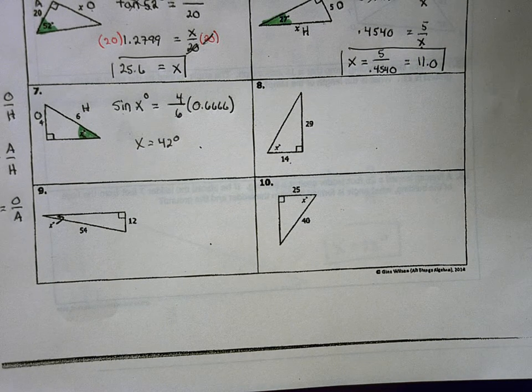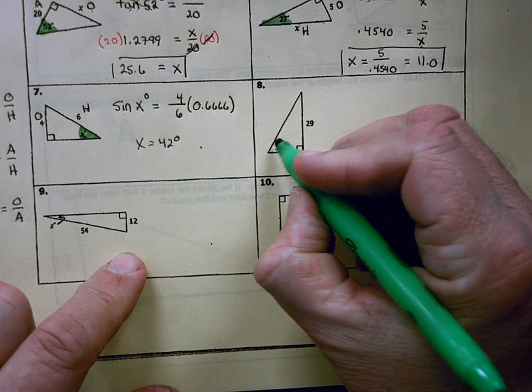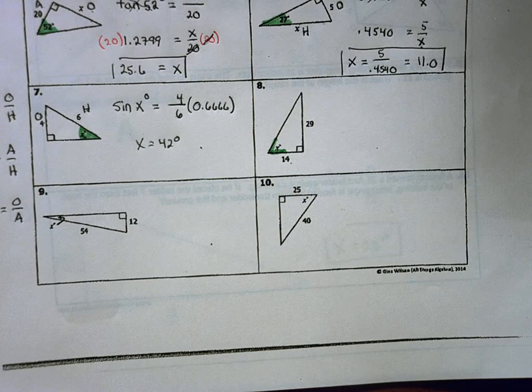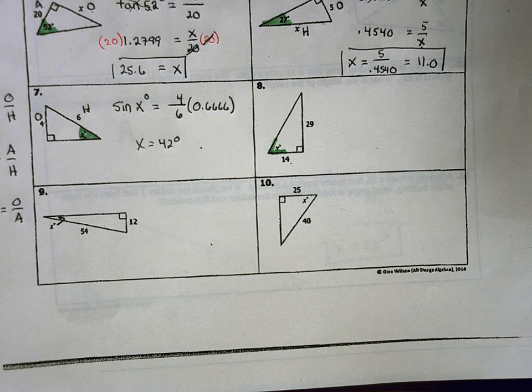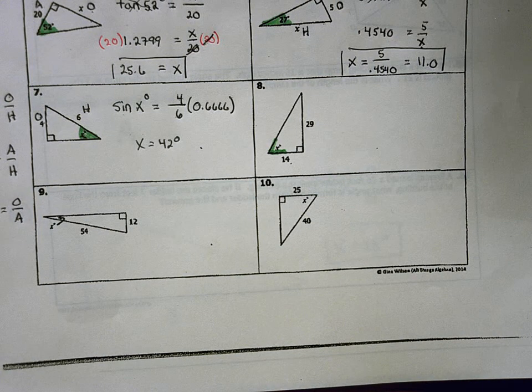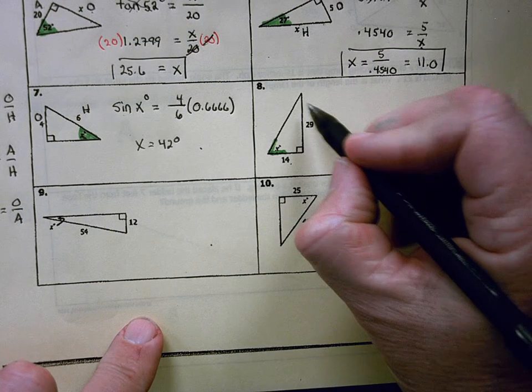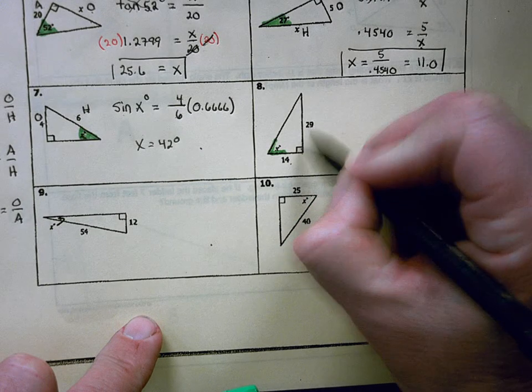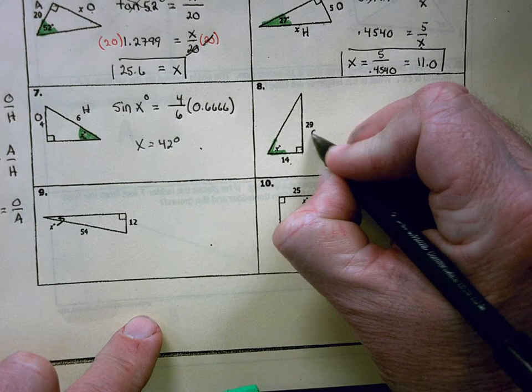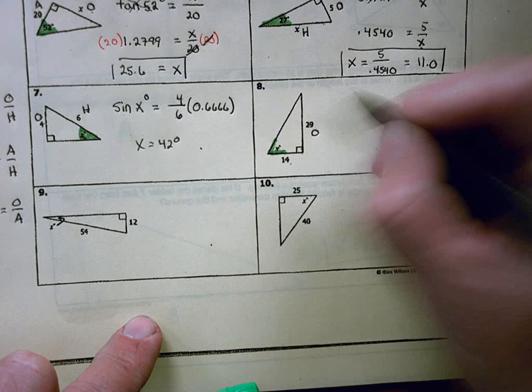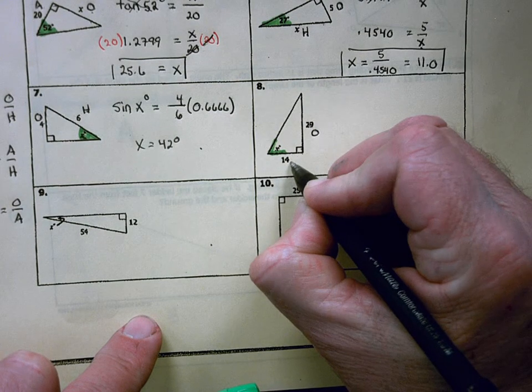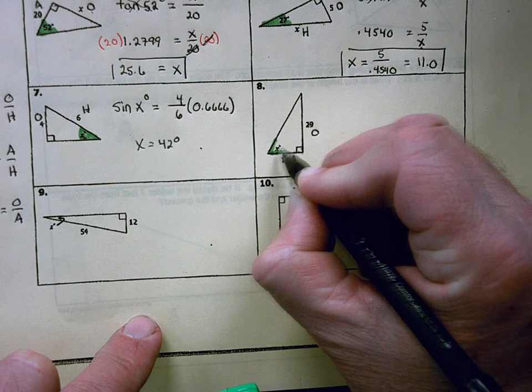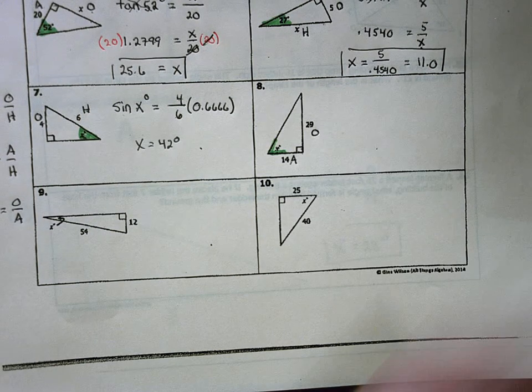So we're solving for x. In this case, x is an angle. So that's going to be what we call my reference angle, my theta angle there. Then we're going to mark the sides that have the numerical values as opposite leg and adjacent leg. So you can see that 29 is a leg, and it's the opposite leg because it's across from my theta angle. 14 is a leg, and it's the adjacent leg. And the reason why it's the adjacent leg is it's the leg that is immediately next to my theta angle.